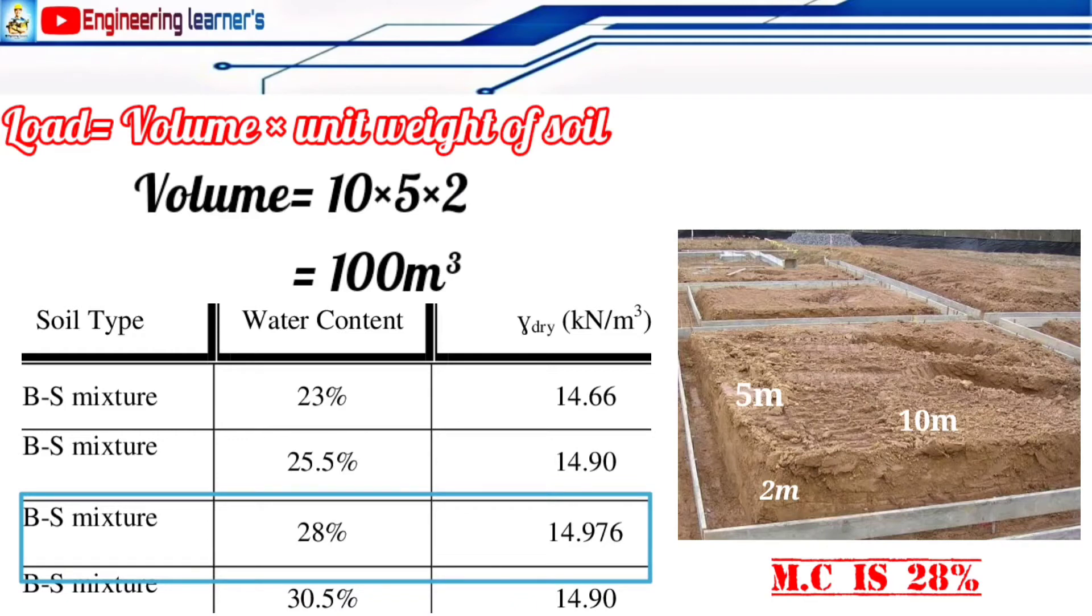the unit weight of the soil should be 14.976 kilonewton per meter cube. So now we can easily find the load of this particular soil sample because we already got the volume and we already got the unit weight of the soil sample.